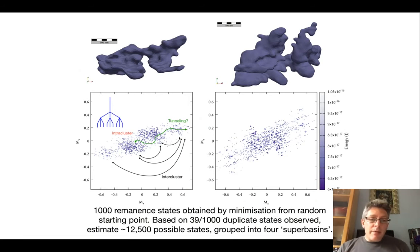Looking at our sorts of particles, we can begin to get a sense of what the energy landscape might look like. In here, for example, we can see individual clusters of remanent states with potentially large energy barriers between them, but potentially much smaller energy barriers that allow you to explore within that cluster.